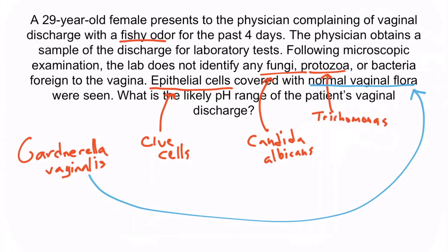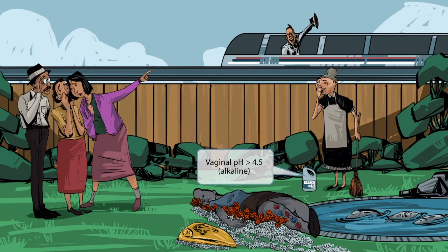Now that we're confident we're dealing with Gardnerella vaginalis, what is the likely pH range of this patient's vaginal discharge? Going back to the image, we can see the bottle of bleach with a sign that reads greater than 4.5, meaning the pH is greater than 4.5. And with that, you've learned all the details you need to memorize for Gardnerella vaginalis.